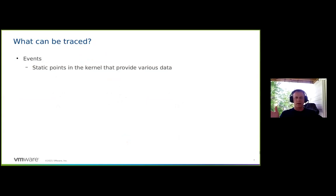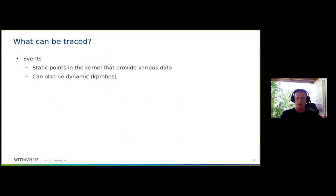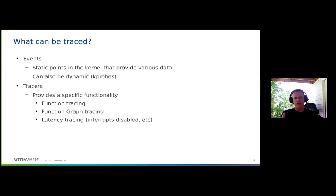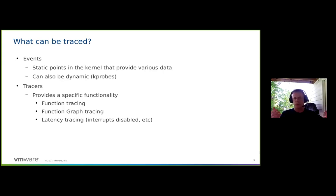What exactly can be traced? First, there are events — static points within the kernel that allow you to extract specific data that the developer wants. They can also be dynamic. On the other side, there are tracers, which are another way of tracing things. Tracers do functionality: the function tracer traces all functions that are called. You can filter it. Function graph tracer and latency tracers add functionality to see how long it takes for a process to wake up, how long interrupts are off, how long preemption is off.